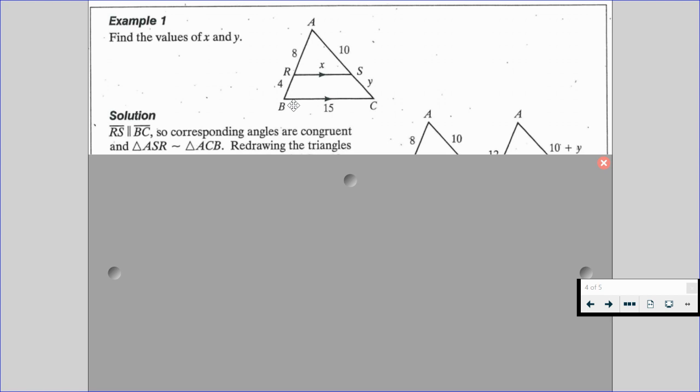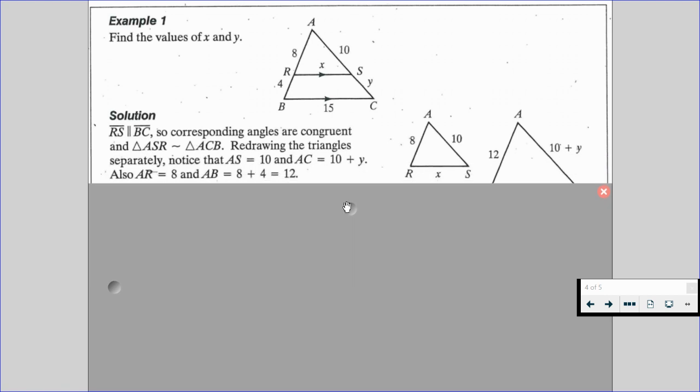And we know that we have corresponding angles, ARS and ABC. Likewise, we have ASR and ACB, and we have angle A is shared in both. Redrawing the triangles over on the right-hand side, we're going to be able to notice that AS is equal to 10. We're given that AC is 10 plus Y. We're also given that AR is 8, and then AB would be 8 plus 4, which is 12.